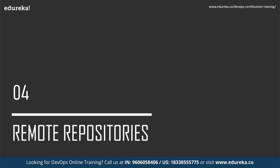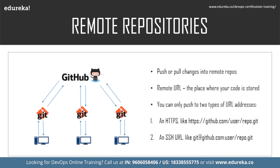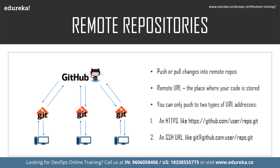Now let's understand remote repositories. Git is a tool that helps you work on your project by creating local repositories on your personal computer. You can either push or pull changes of your file into your remote repository that is present on a platform like GitHub. A remote URL is Git's way of saying the place where your code is stored — it could be your repository on GitHub, another user's fork, or even a completely different server. You can push to two types of URL addresses: an HTTPS URL or an SSH URL.